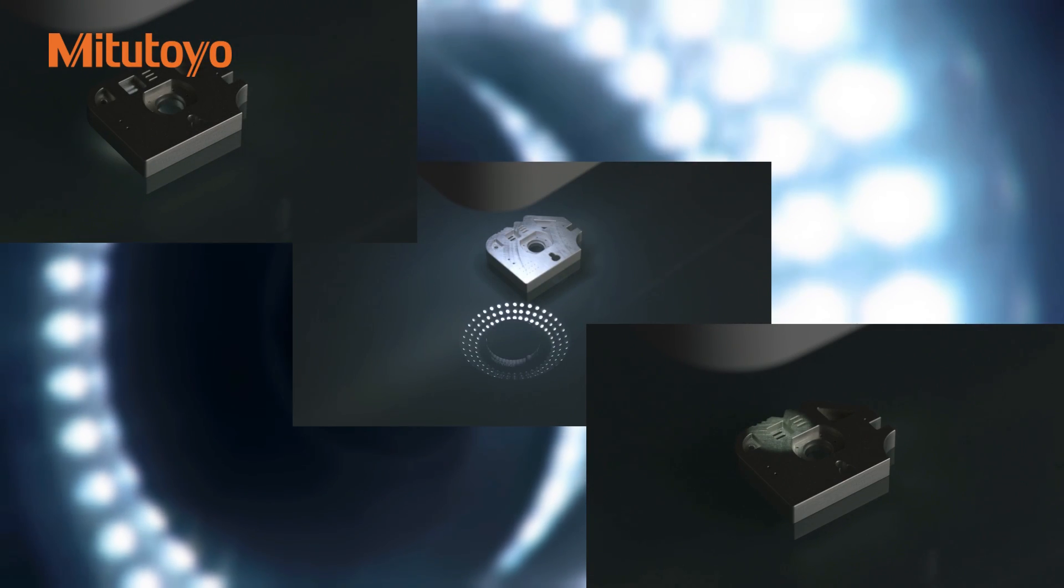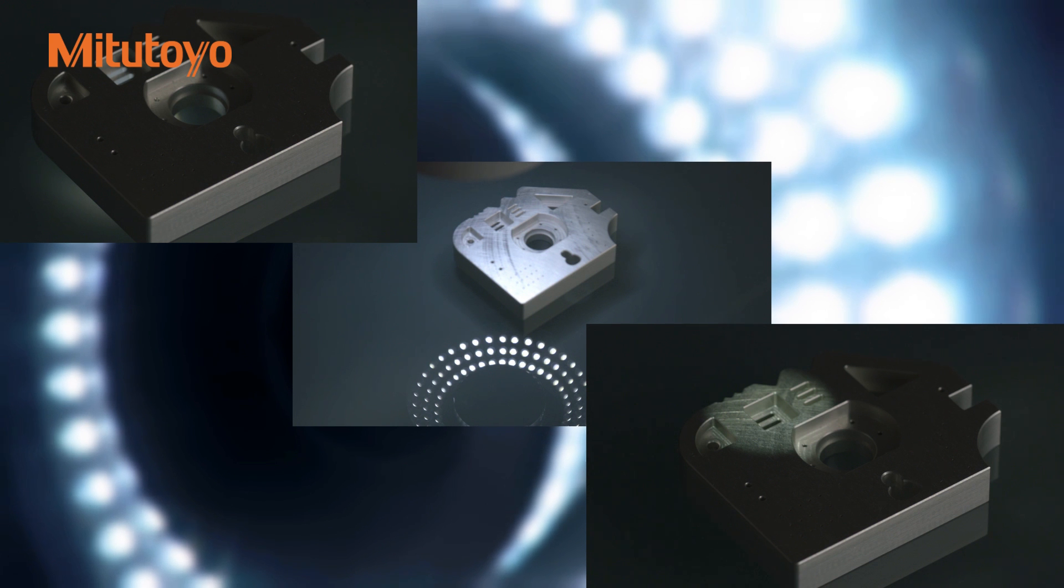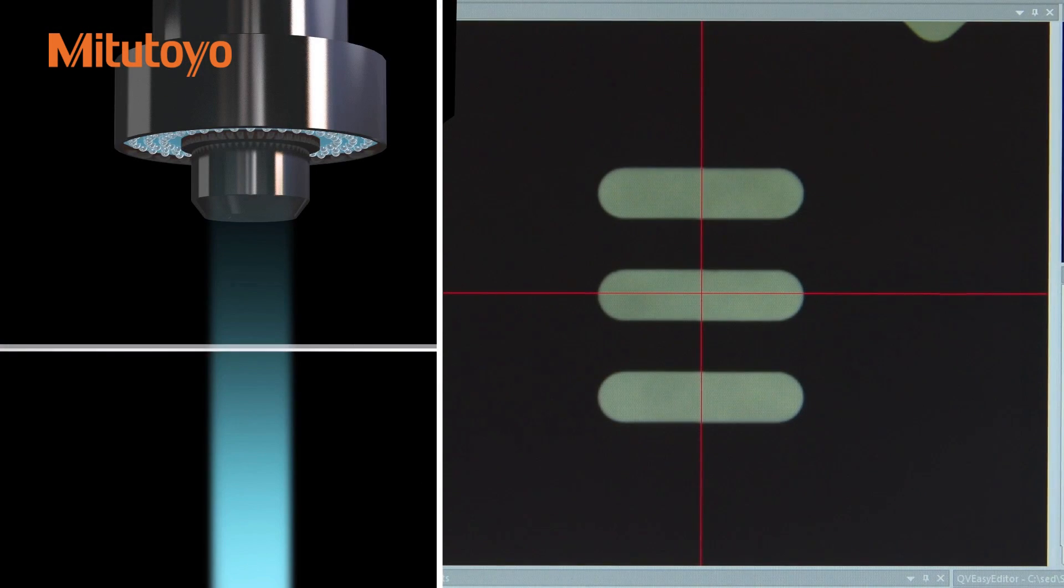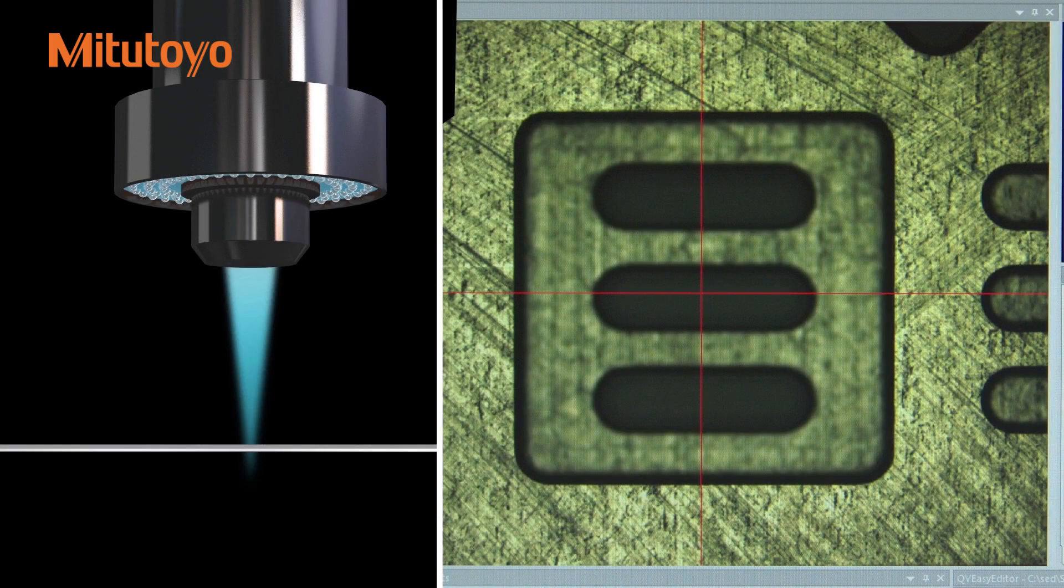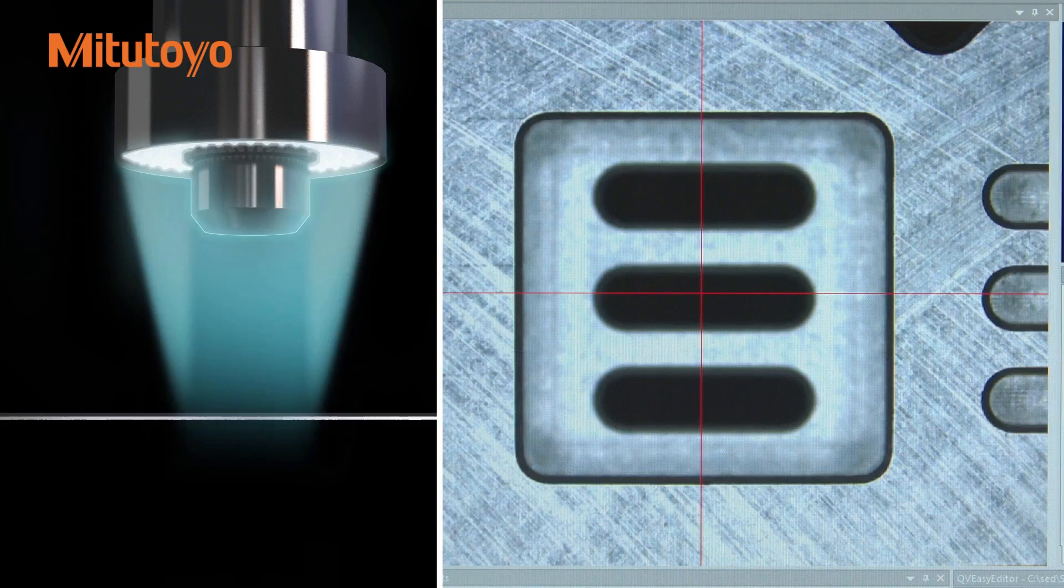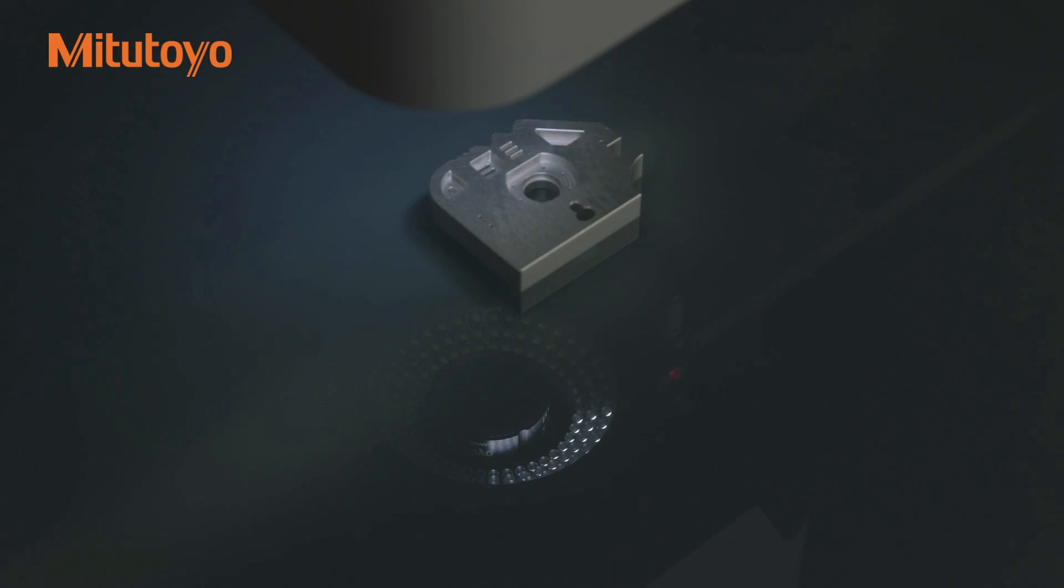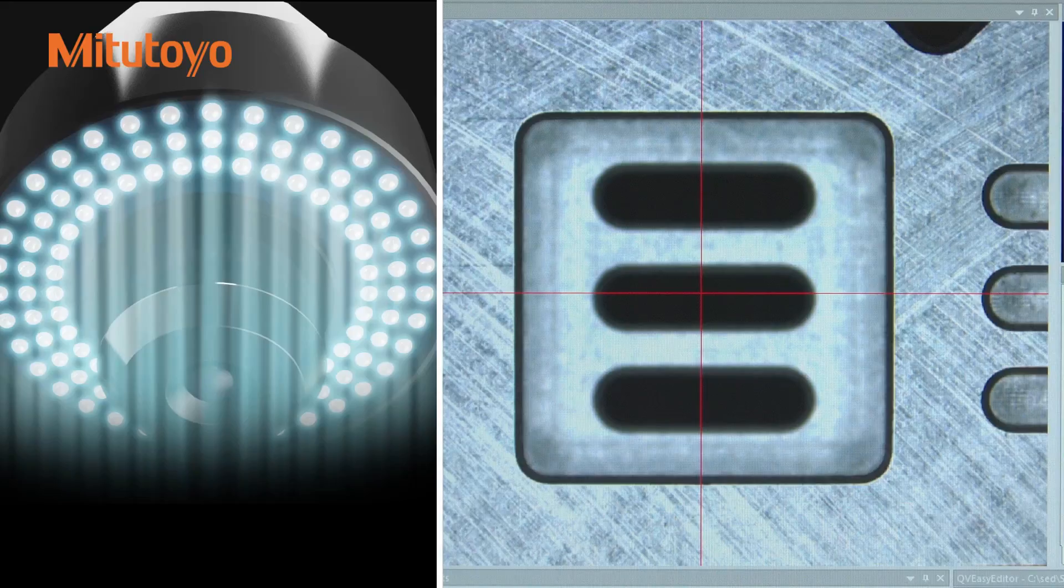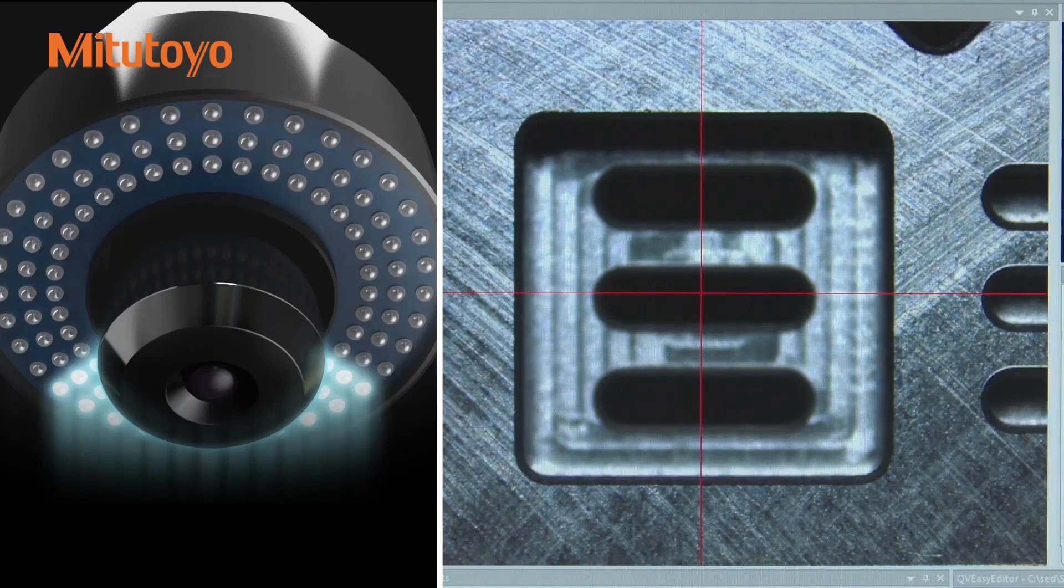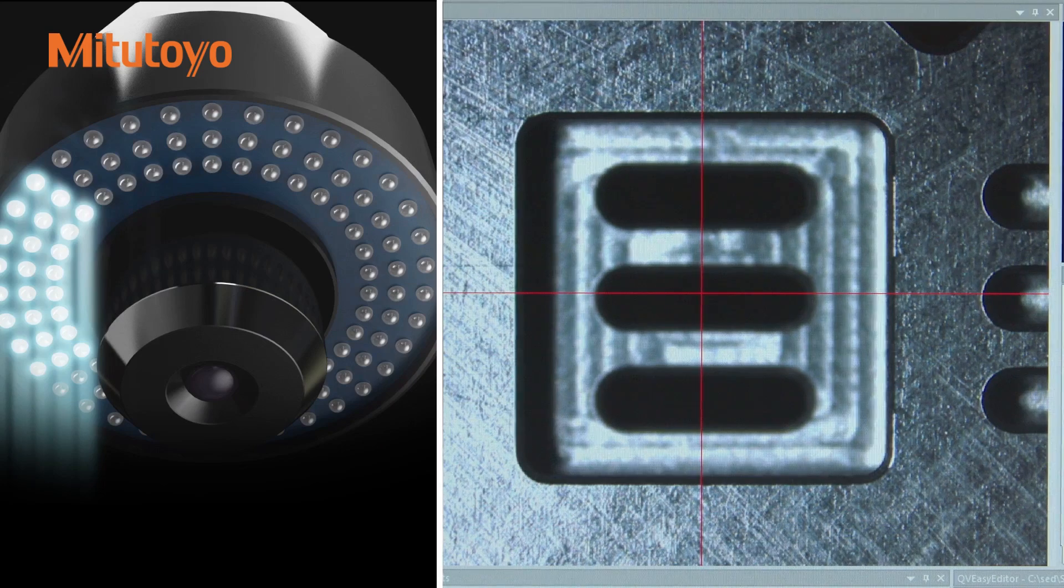The Quick Vision Active series has three high-intensity LED light sources: stage lighting or backlighting that comes from behind the workpiece, coaxial lighting that comes through the lens, and a four-quadrant programmable ring light. Note how the appearance of the image changes based on the selected illumination.